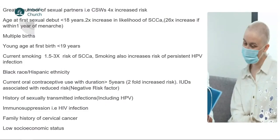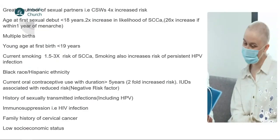What are the risk factors that predispose us to HPV infection and cervical cancer? These risks have been established by randomized clinical trials and the highest levels of evidence. Number one: a greater number of sexual partners — among commercial sex workers, there is a fourfold increase in the likelihood of attaining cervical cancer. Number two: age at first sexual debut. If sexual debut was earlier than age 18, there is a twofold increase in acquiring cervical cancer, revised upward to a 26-fold increase when debut occurs within one year of menarche.